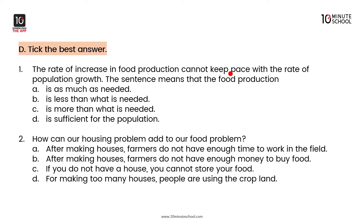The rate of increase in food production cannot keep pace with the rate of population growth. This sentence means that food production is less than what we need. It is not as much as we need, and it is not sufficient for the population — our food production is less than what we need.